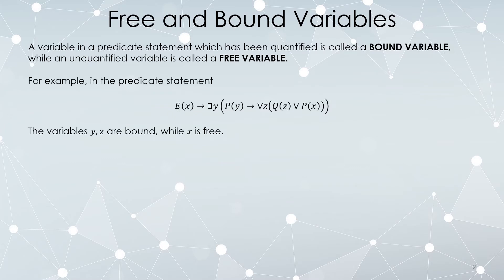Here's a potential predicate statement: e of x implies there exists a y, so that p of y implies for every z, q of z or p of x. Y and z are bound — y is bound by the existential quantifier, and z is bound by the universal quantifier. These variables have been bound by quantifiers, but x is a variable which is free.